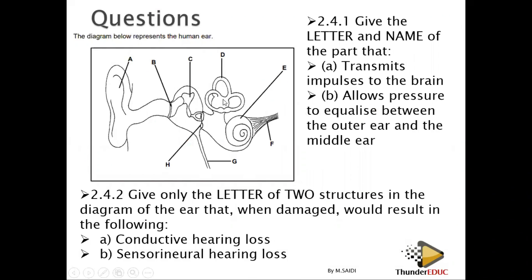Let's look at some questions that can be asked. Here is a diagram: give the letter and name of the part that transmits impulses to the brain. You have to know the part and its function. The answer is F — the auditory nerve.